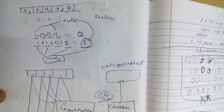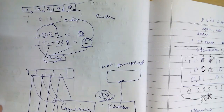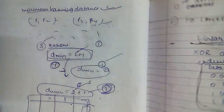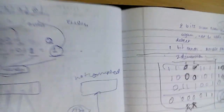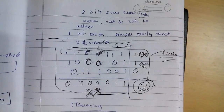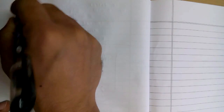Welcome back everyone. Last time we were discussing some linear block codes and we discussed simple parity check and two dimensional parity check. So this time we are going to see another one known as Hamming codes.